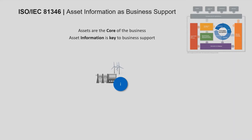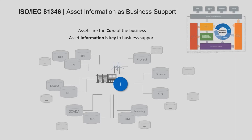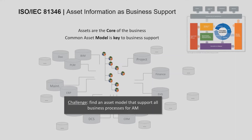Asset information starts with the assets. We see assets as the core of the business where asset information is absolutely key to business support. This is illustrated by a figure borrowed from the Asset Management Institute — information about assets is what enables operations and development of those assets. This information is distributed across many different systems, and the way it's organized is central to how it can be shared across platforms and used in different business scenarios.